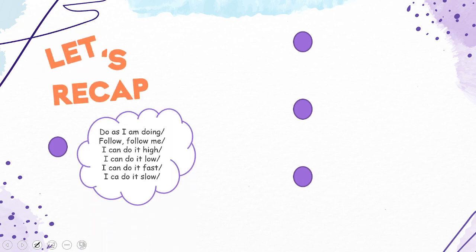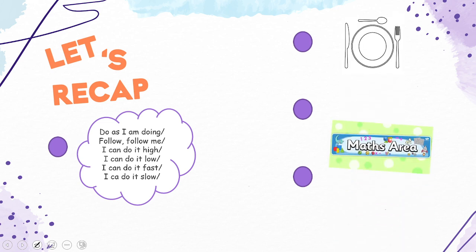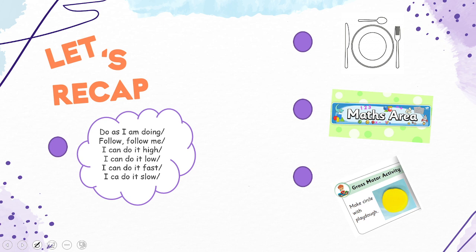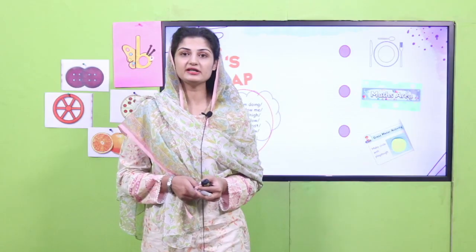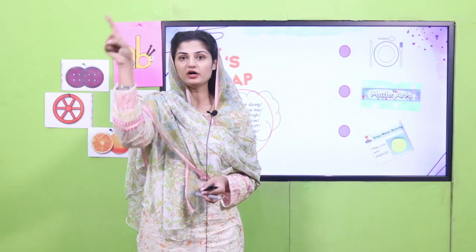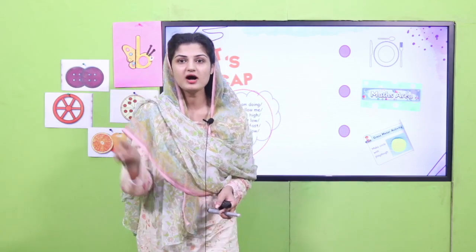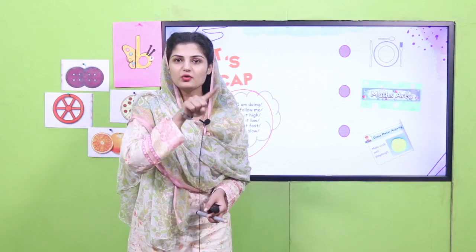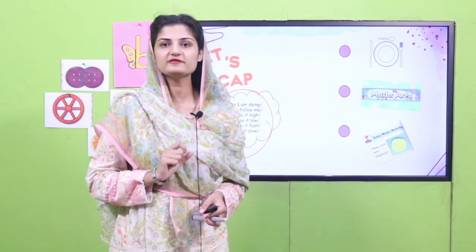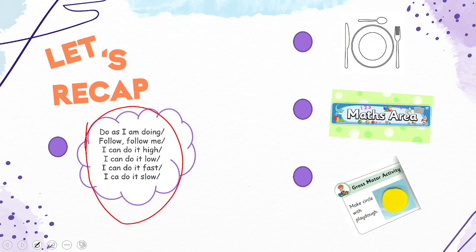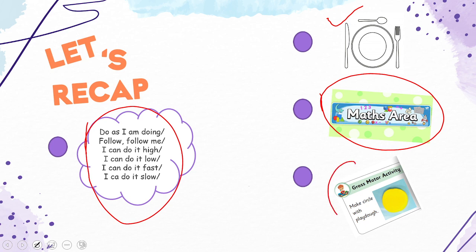Let's quickly go through the recap. We have done the poem — 'Do as I am doing, follow me' — and in that poem we made the circle in the air. After that, what we done? We sorted the edibles of circle shape and pasted them into the plate. We counted the circle objects in the math area, and in the end we made the circle with the play-doh.